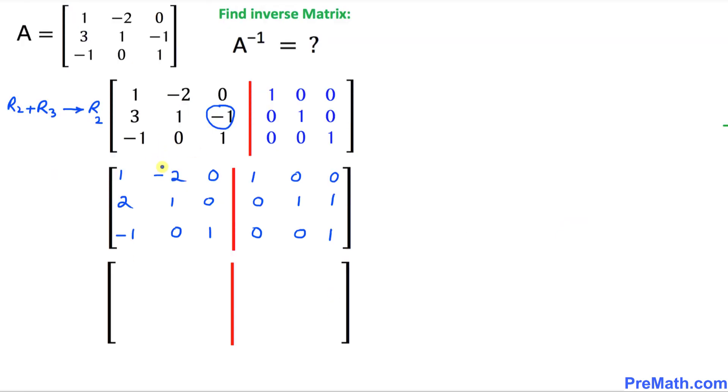Now in the next step, we are going to make this negative 2 as 0. So this is the operation I'm going to perform. I'm going to say row 1 plus 2 times row 2, and just put it back to row 1.